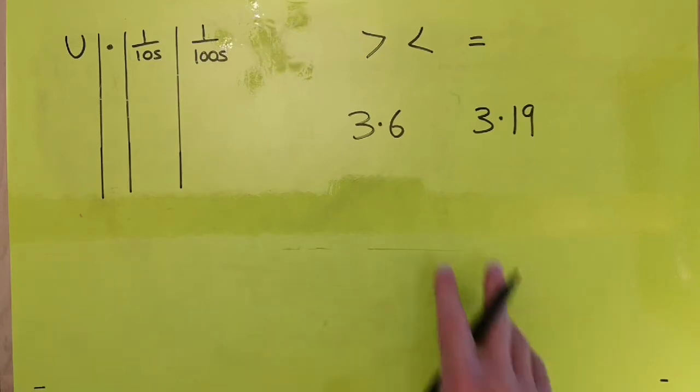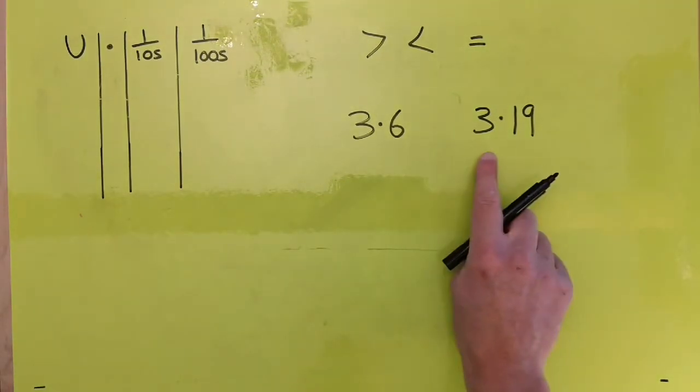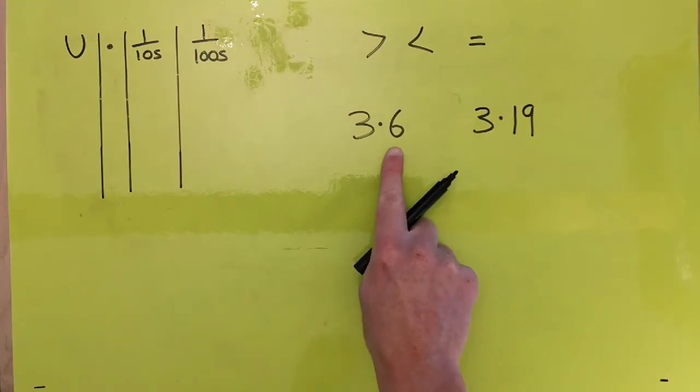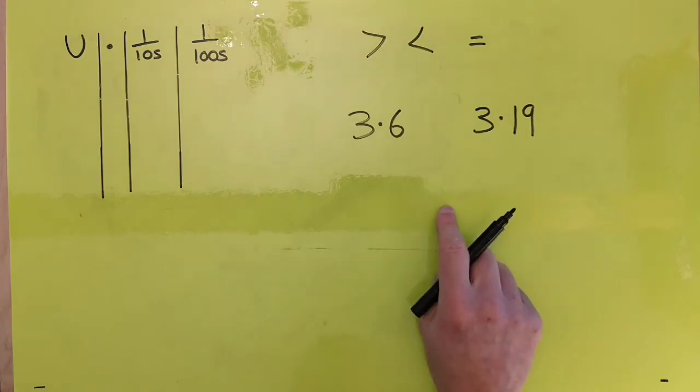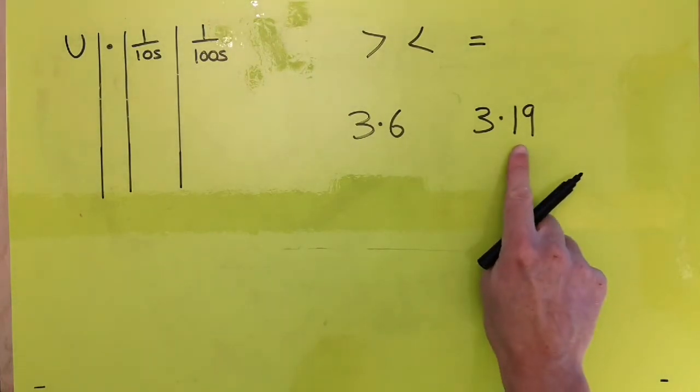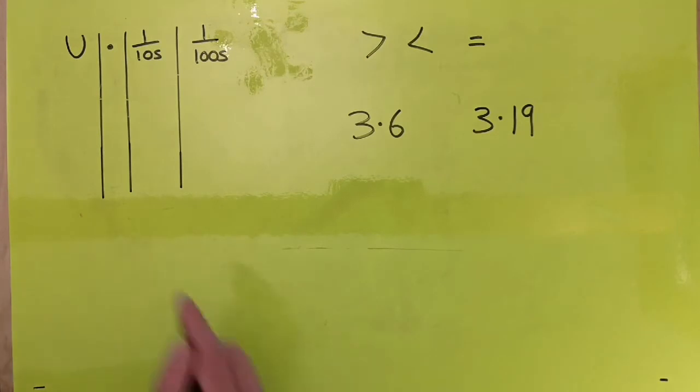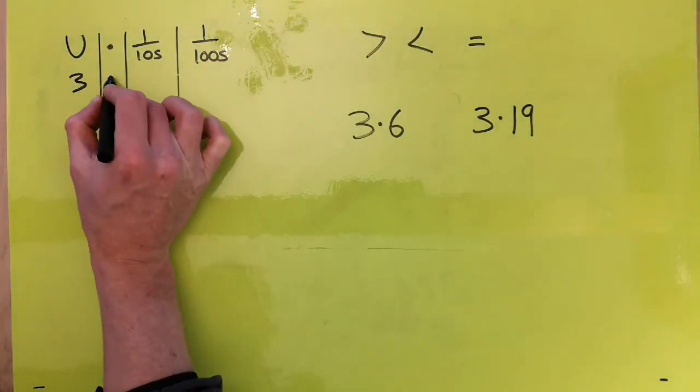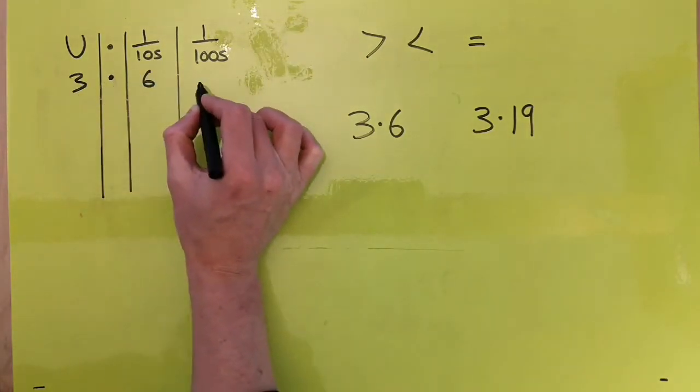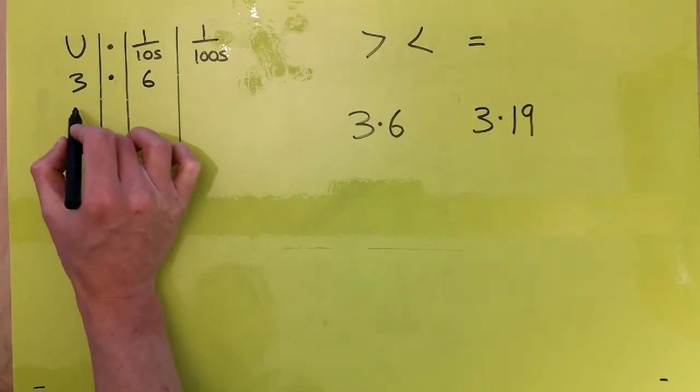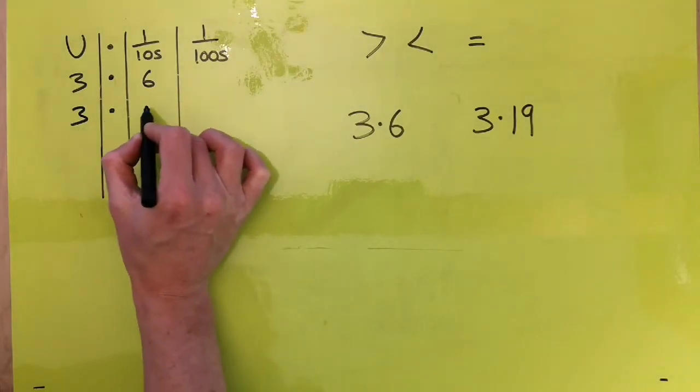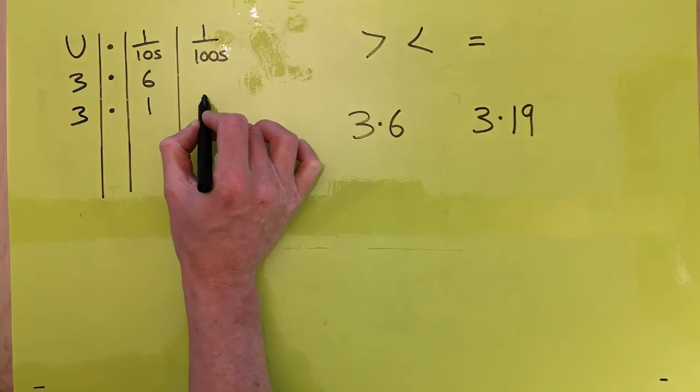So we're going to compare these two numbers. We've got 3.6 and we've got 3.19. Now you can see that's got 6 tenths and then we've got 1 tenth here and 9 hundredths at this point. So if we put that into our place value chart just to make sure we know what we've got. It's got 3.6 there and then underneath that we've got 3.19.